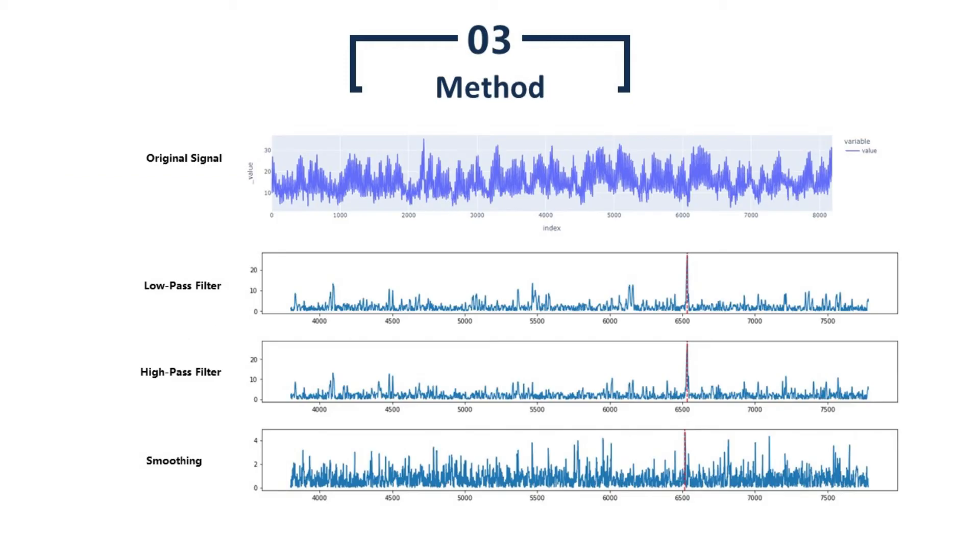The plot on this slide shows the results of the above Fourier transform-based methods. The top plot is the original signal, and the bottom three are the residuals calculated from the methods we presented in the last slide. Red dashed vertical lines show the location of the anomaly. Although the anomaly is hard to visualize in the original signal, all three methods successfully detect the anomaly, with low-pass and high-pass filter methods working better.